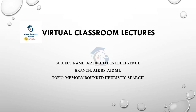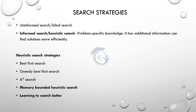Let's move into today's topic: search strategies. There are two types of search strategies — uninformed search or blind search, and informed search or heuristic search. With informed search, we use problem-specific knowledge, that is some additional information, to find out a solution more effectively.